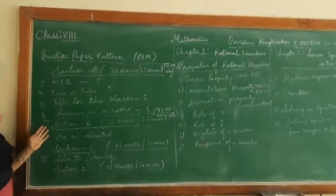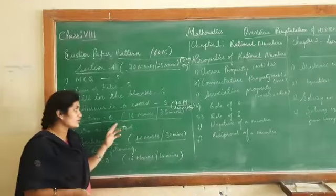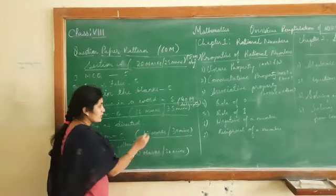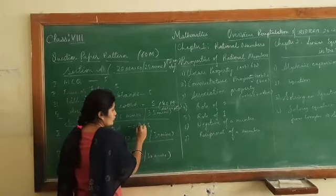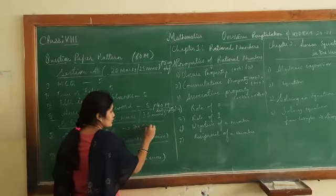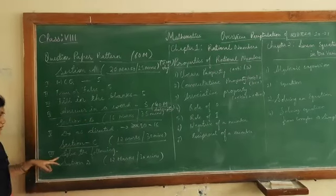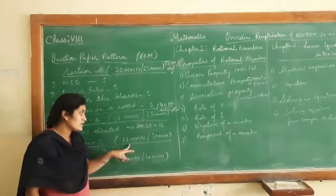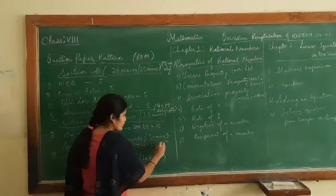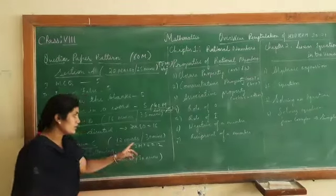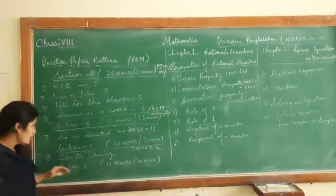After completion of section A, you have section B which is for 16 marks - 2 marks per question, 8 questions, do as directed, which gives 2 into 8 equals 16 marks. Section C has 6 bits - solve the following, for 12 marks. Section B you need to solve in 35 minutes and section C in 30 minutes.